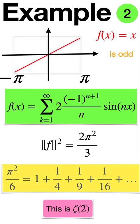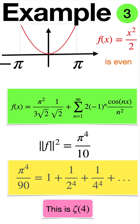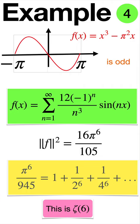when taking x squared over 2, we can get the formula for zeta 4. And for x cubed minus pi squared x, we get the nice formula for zeta 6.